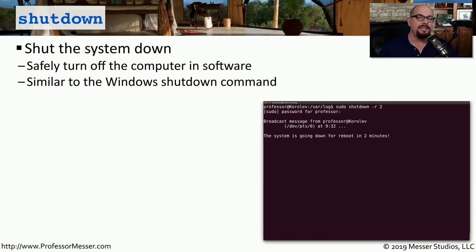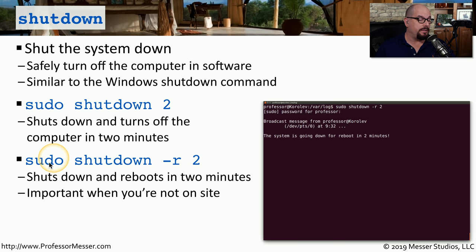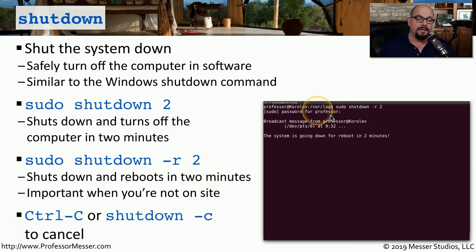One command that needs elevated rights is the shutdown command. You may be working on a remote device and want to reboot it during troubleshooting. The syntax is slightly different from Windows. Using 'sudo shutdown 2' will shut down and turn off the system after two minutes. If you want the system to reboot, use the shutdown command with the -r option — so 'sudo shutdown -r 2' shuts down in two minutes and then reboots. On some Linux versions, after running shutdown it will wait at a prompt, and you can cancel with Control C.